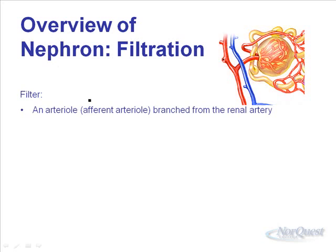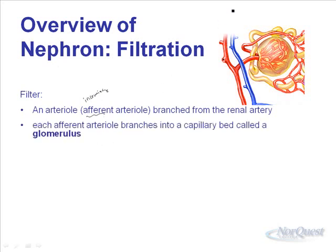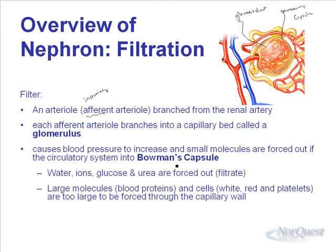The afferent arteriole — or incoming arteriole — branches from the renal artery and enters a structure called the glomerulus. The glomerulus is the capillary bed, surrounded by a structure called Bowman's capsule. Blood pressure gets so high inside the glomerulus that a bunch of water and ions — basically the plasma portion of your blood — gets forced out of the glomerulus into Bowman's capsule, and enters the nephron. That's the filtration — it's almost like a coffee filter.